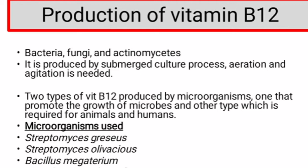Next, we can discuss the production of vitamin B12. Many different types of bacteria, fungi and actinomycetes synthesize vitamin B12. However, intestinal and rumen bacteria are more important in its production. Two types of vitamin B12 are produced by microorganisms: one that promotes the growth of microbes, and another type which is required for animals and humans.